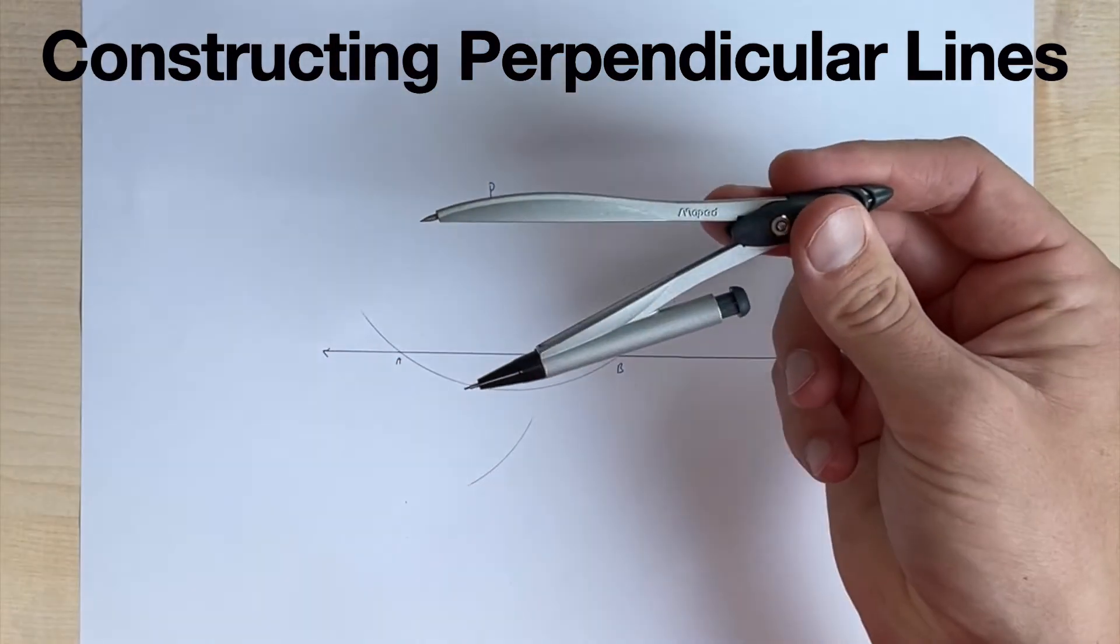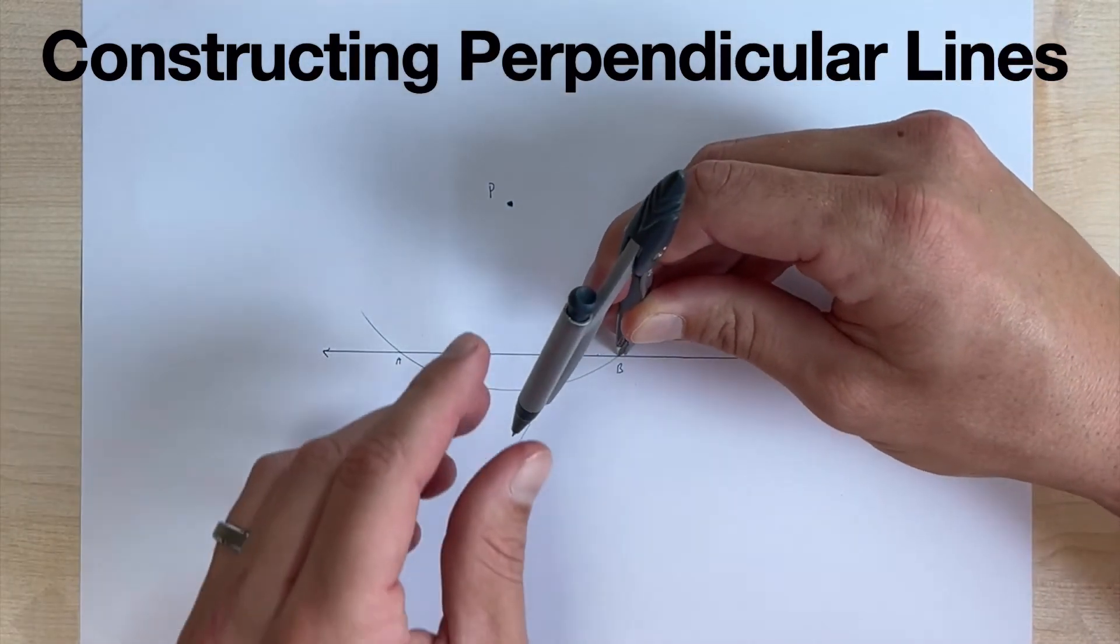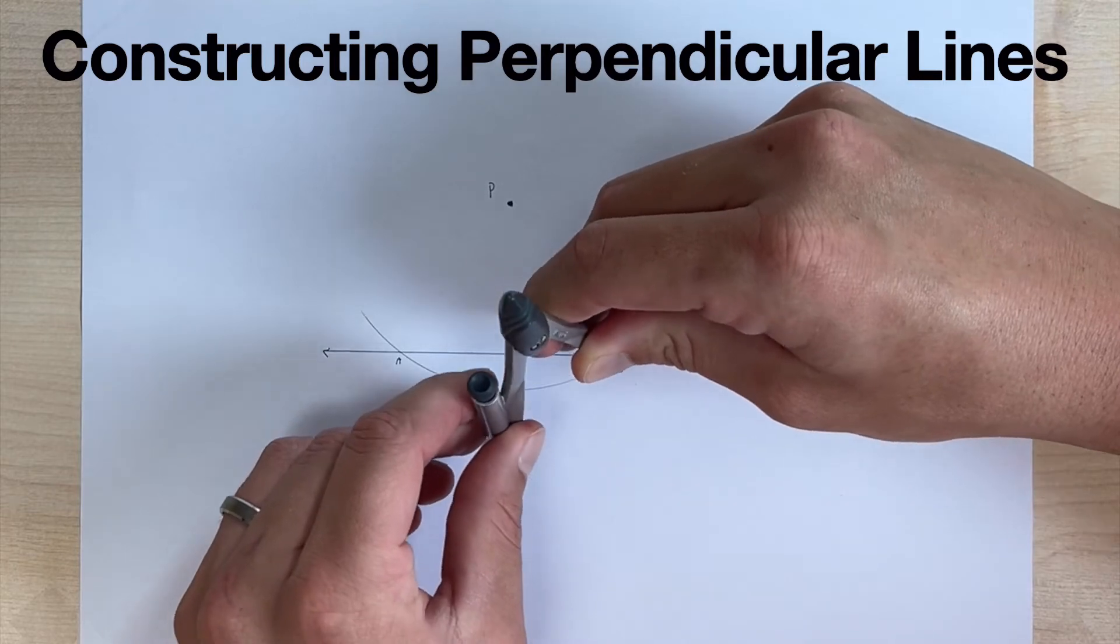Okay. Now keep the compass open the same amount. Now move the needle to the intersection that we have labeled B and we're going to make an arc down here.